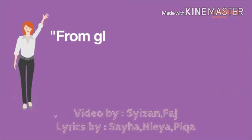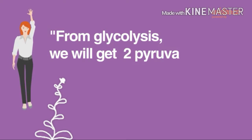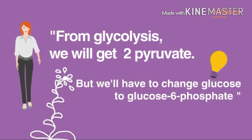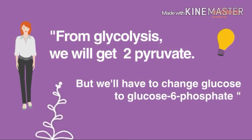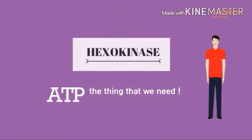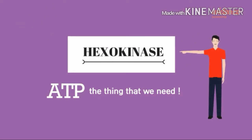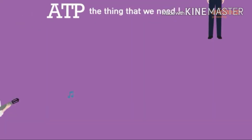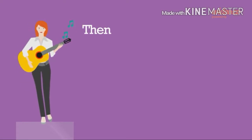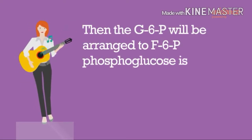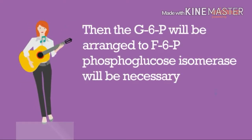From glycolysis, we will get to pyruvate. But first we'll have to change glucose to glucose-6-phosphate. Hexokinase is the enzyme we need for this step.